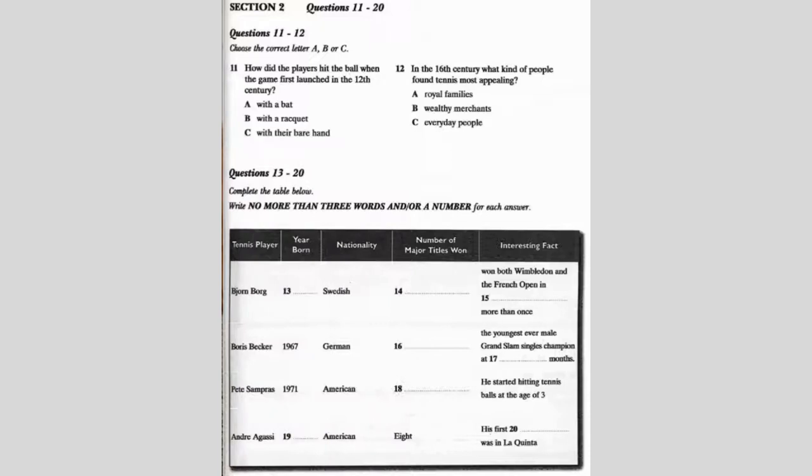Moving on to our next great player, we have Pete Sampras. He was born on August the 12th, 1971 in Washington, D.C. And during his 15-year career, he won 14 Grand Slam men's singles titles. His flair for the game was evident at age three when he discovered a tennis racket in the basement of his home and spent hours hitting balls against the wall. His parents are of Greek origin. He has given some truly unforgettable performances on the court over the years.